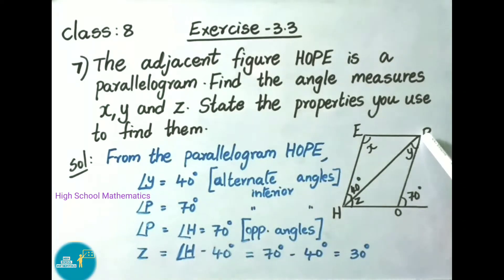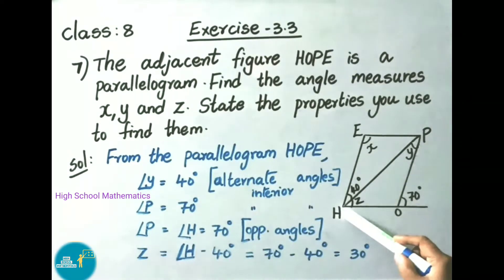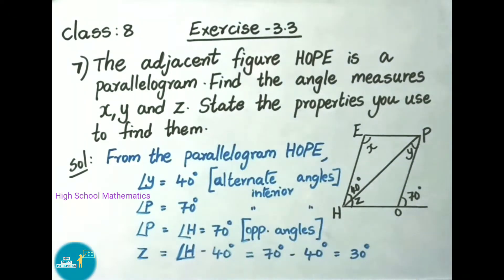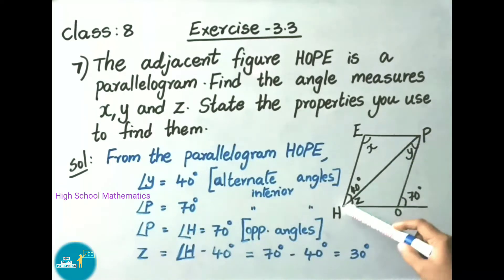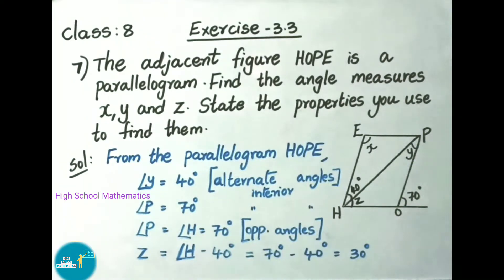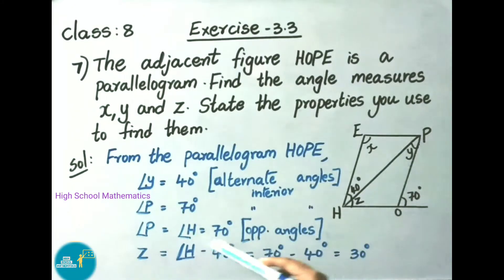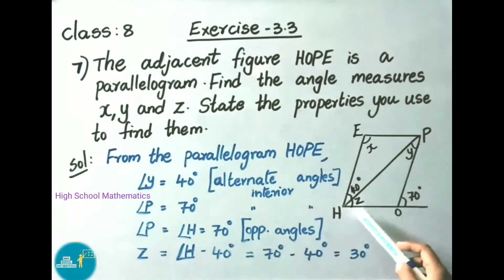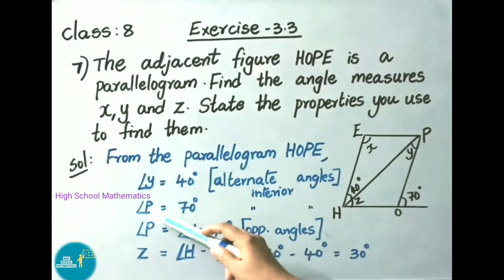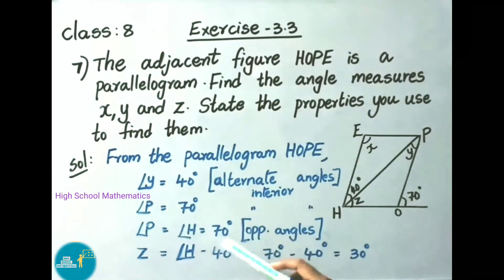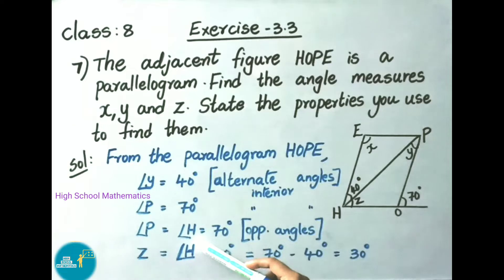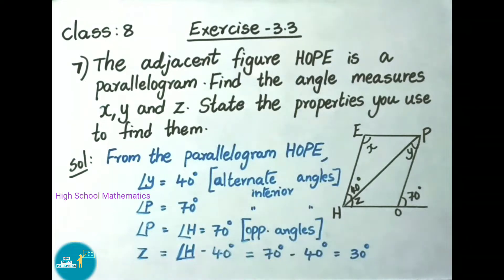Next, angle P is equal to angle H. Why? Because opposite angles of a parallelogram are equal. So angle P equals angle H, that equals 70 degrees. So H is also 70 degrees.